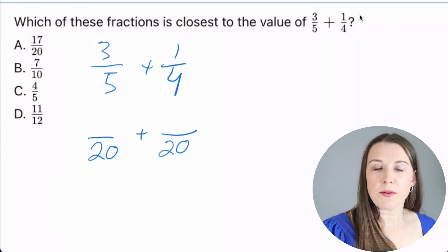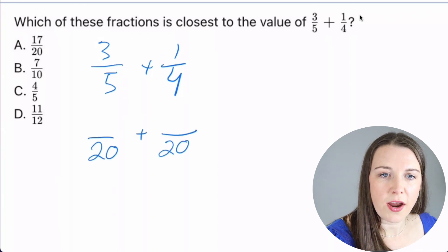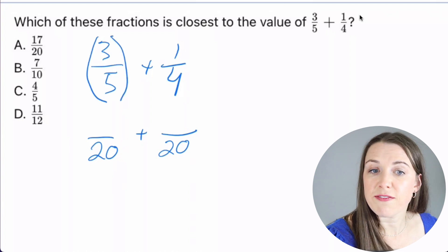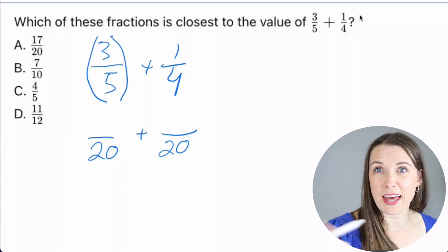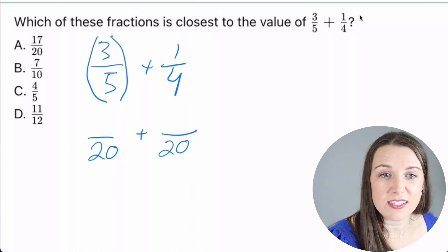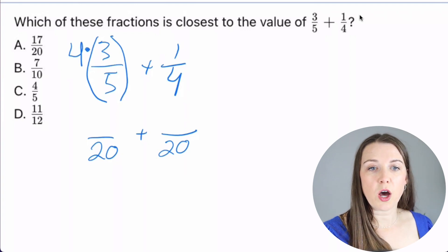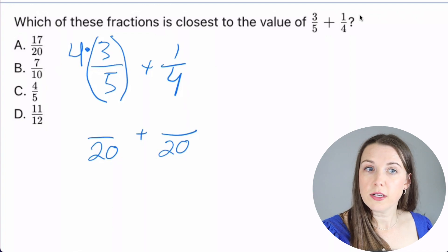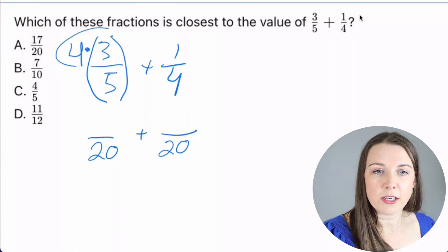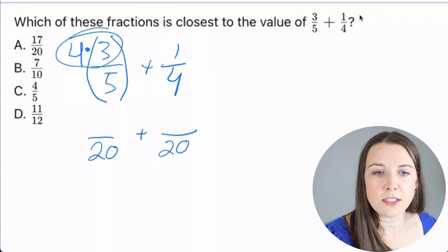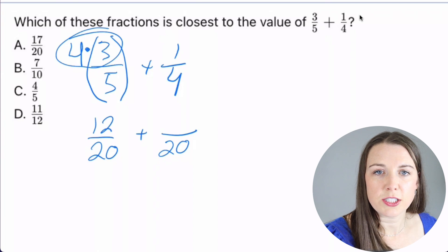And now what I'm going to do is this right here, the 3/5, I'm going to multiply that by 4, right? Because 5 times 4 is what gives me 20. So now I will go 4 times 3. So right in here, 4 times 3 is 12. Let me change colors here.